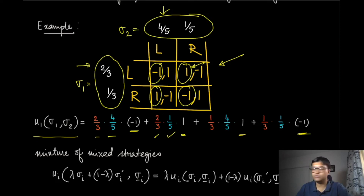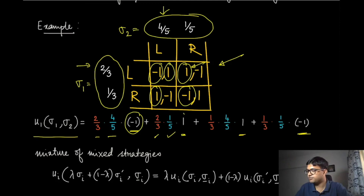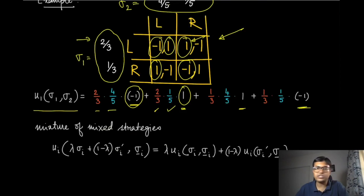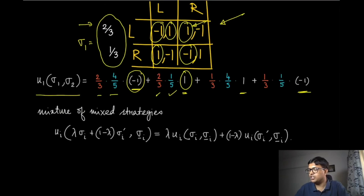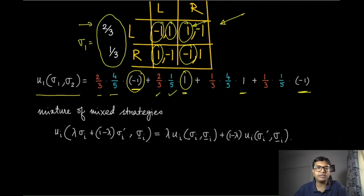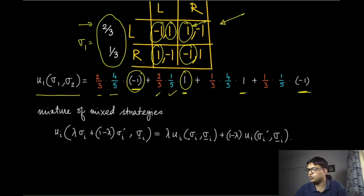Similarly, you can write down the utility for player two, where the utility values get replaced by the second entries in the payoff matrix. You can also talk about mixtures of mixed strategies — where two mixed strategies are themselves being mixed — but that will also give rise to a new mixed strategy. This kind of notion is rarely used in practice, but it is good to know.